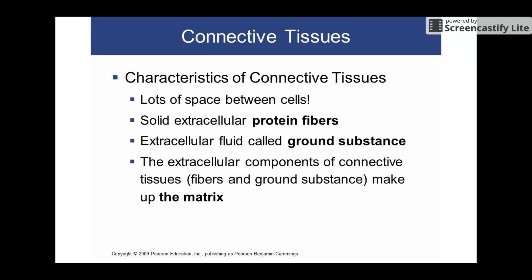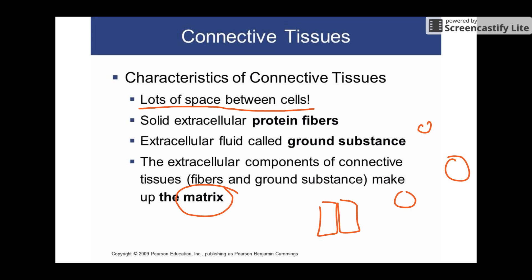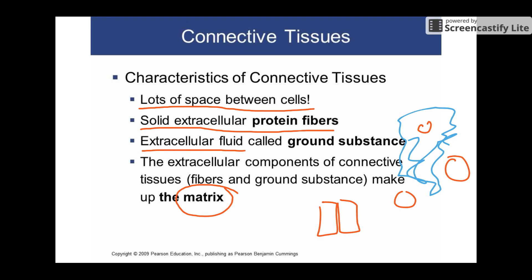Connective tissues in general have a few common characteristics. First, there's usually lots of space between the cells, and that space is referred to as the matrix. So while epithelial cells were kind of bricks together, connective tissue cells are spread apart with everything in between being the matrix. The matrix is made up of two big components: the solid protein fibers and the extracellular fluid, which is called the ground substance. Those are vocab words you want to make sure you're familiar with, along with matrix itself.